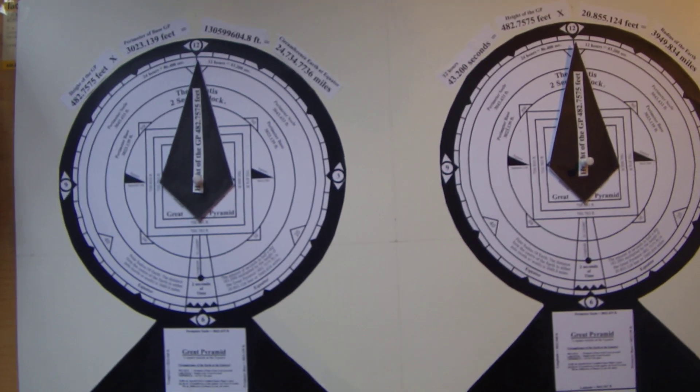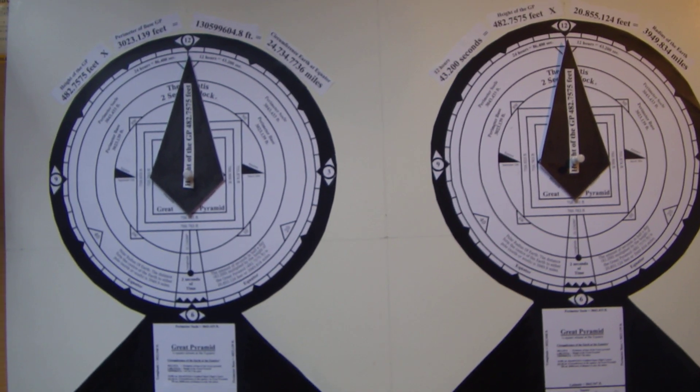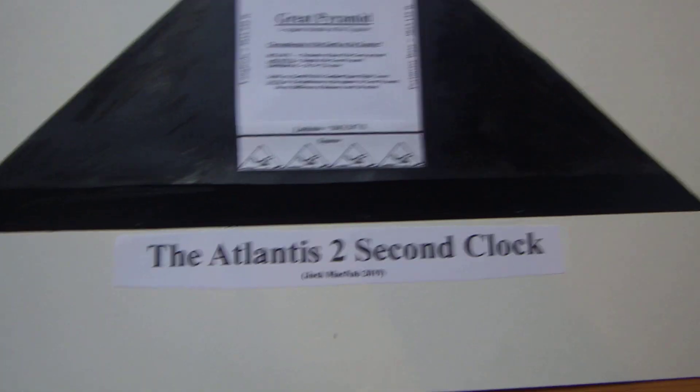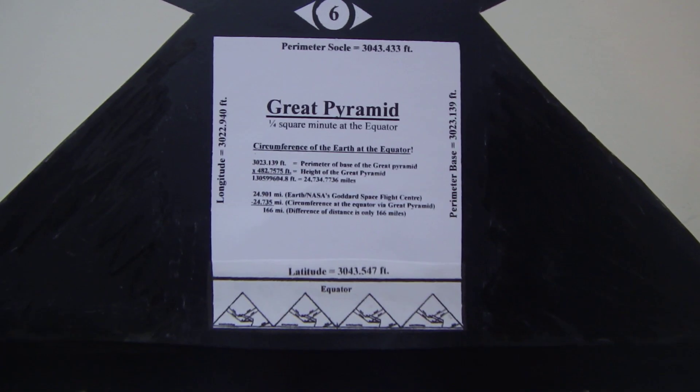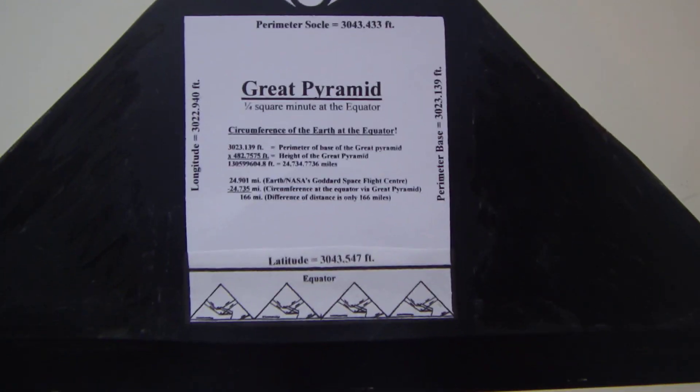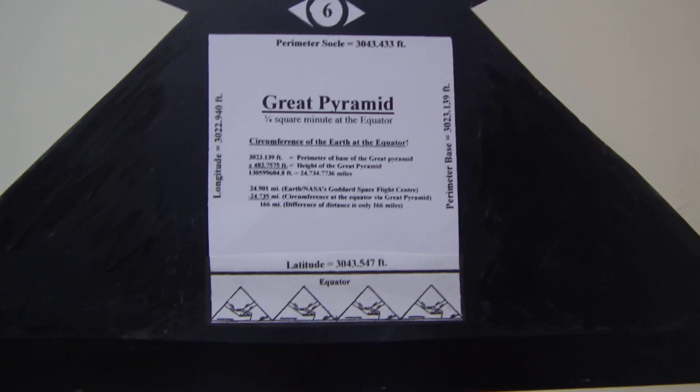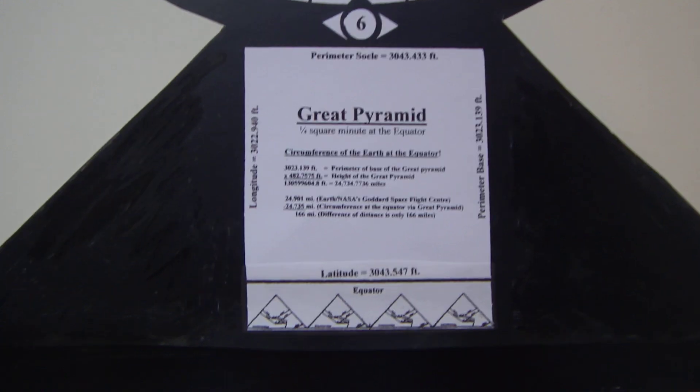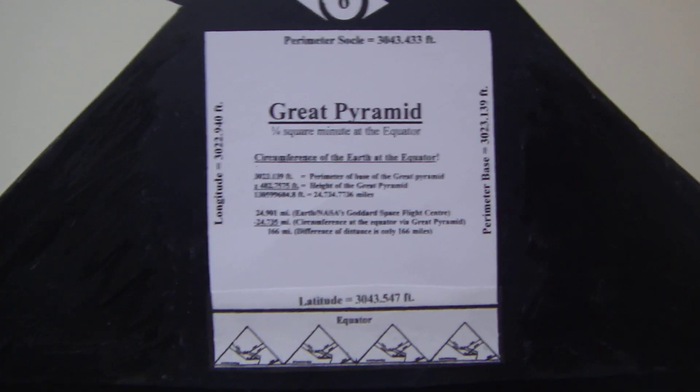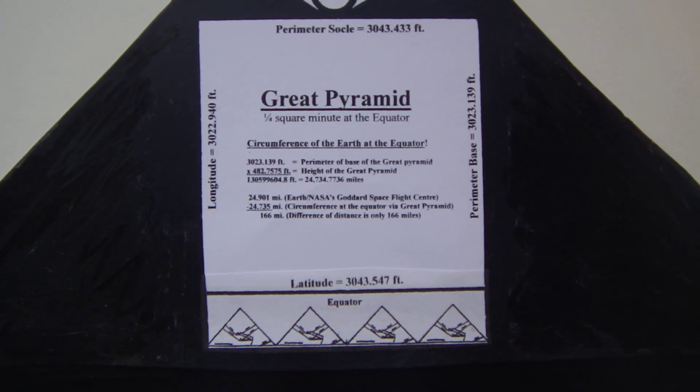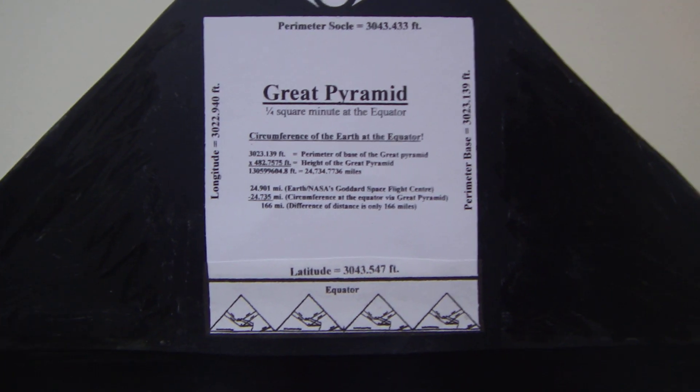So over here is the circumference we're going to deal with in a minute, and over here is the radius. I'll take you down to this little box here. This deals with the circumference of the earth, how to find it by means of the Great Pyramid of Giza: the perimeter multiplied by the height of the Great Pyramid of Giza. I hope you can read this later and that way you can stop your video and take these figures and see for yourself how this all works.